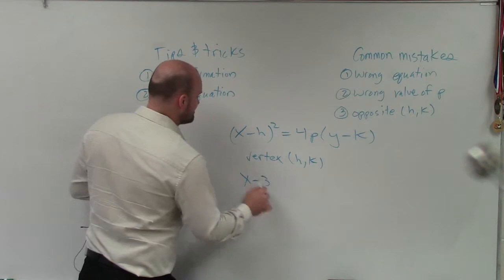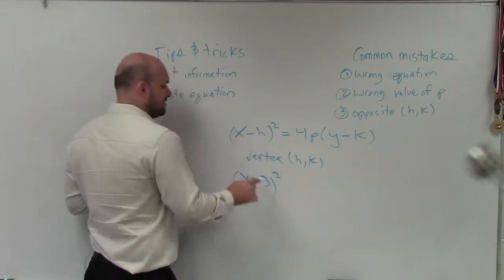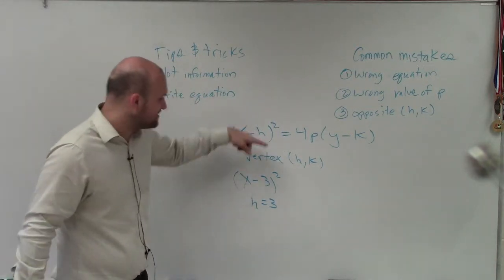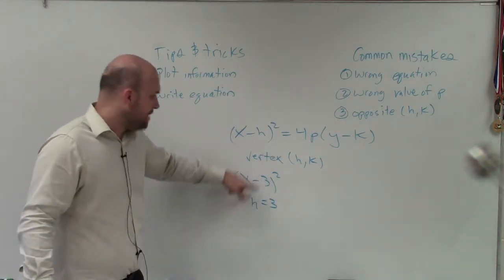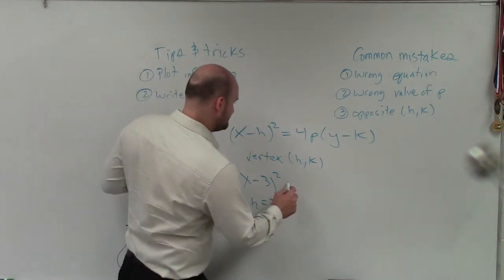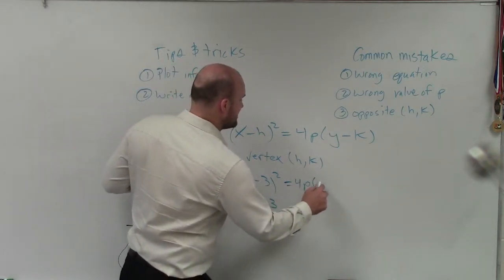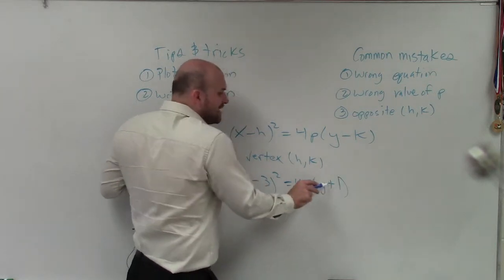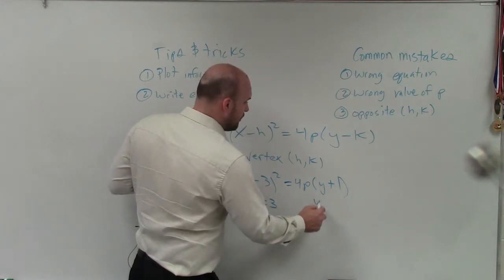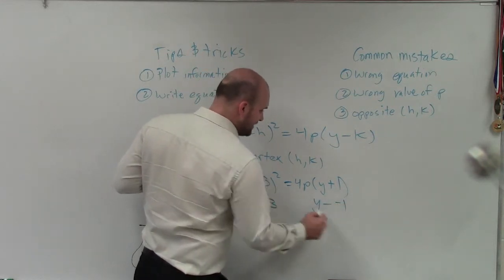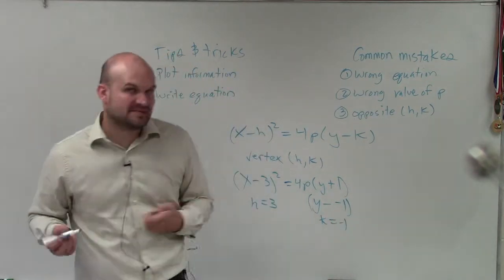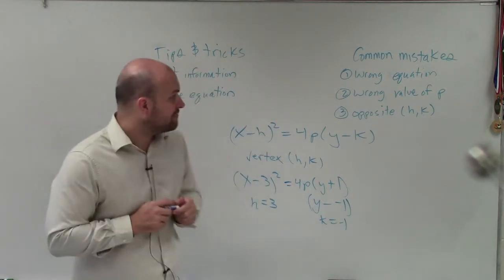So if you have an equation x minus 3 squared, then h is equal to 3. It's not equal to negative 3. It's x opposite of h - x opposite of 3. So that means h is equal to 3. And if you had equals 4p times y plus 1, we can still write that as y opposite of negative 1. So therefore, k would equal negative 1. So a very common mistake still gets a lot of students there.